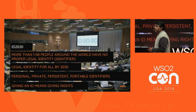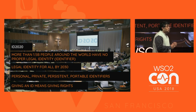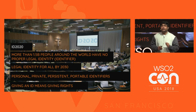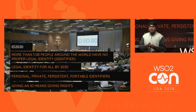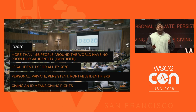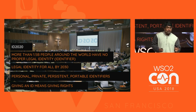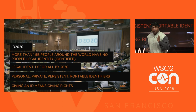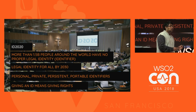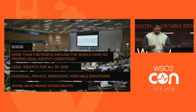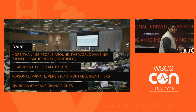ID2020 is an initiative by the United Nations to give legal identities to everyone on earth by 2030. There are more than 1.5 billion people around the world without a legal identity — meaning they cannot get education, cannot open a bank account, cannot open a business. If you don't have a legal identity, you do not exist. This program tries to give legal identity to all these people using personal, private, persistent, and portable identifiers built on blockchain. Personal means unique and only for you; private means you are totally in control; persistent means it is for a lifetime; portable means you carry it wherever you go.